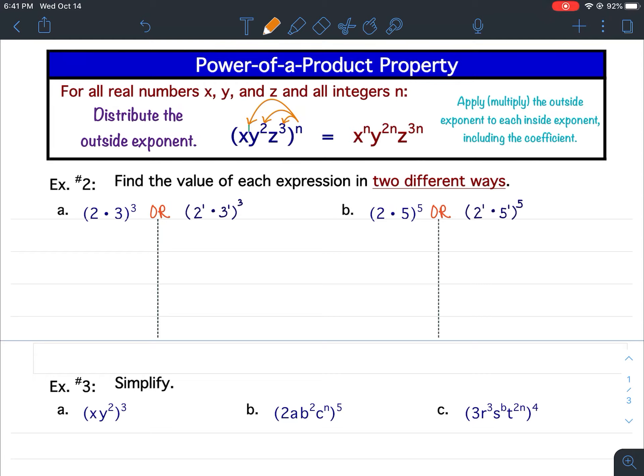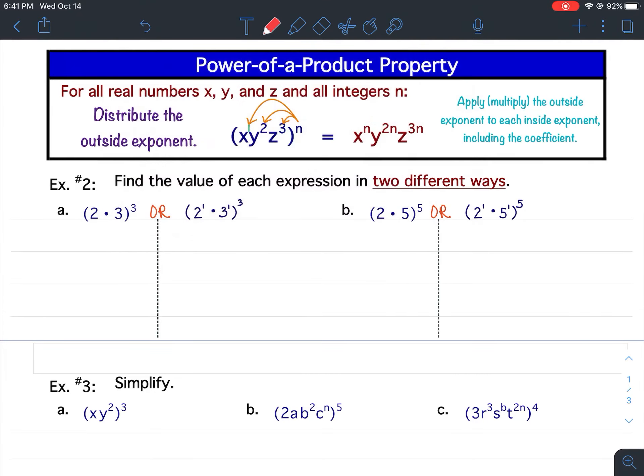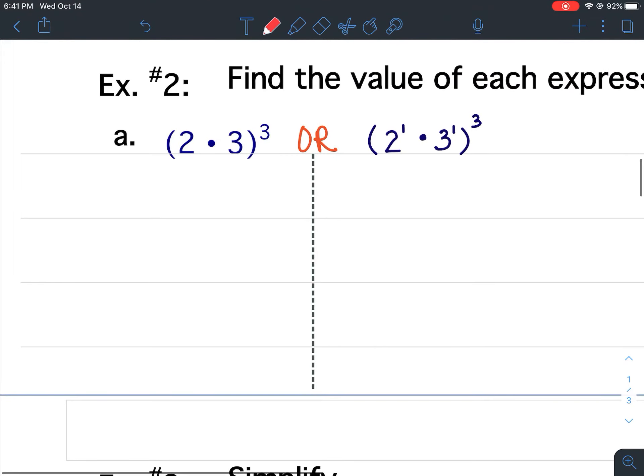So let's look at example 2. It says find the value of each expression in two different ways. So I'm going to show you what we would normally do by following the order of operations, and then I'm going to show you how you would do it by using the power of product property. So looking at example number 2A. If we were following the order of operations, what we would do first is what was inside the parentheses. And 2 times 3 is 6. So this would be 6 to the third power.